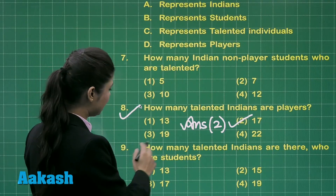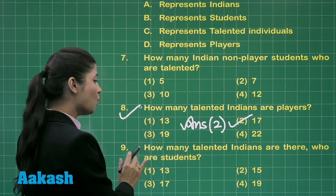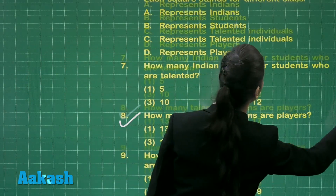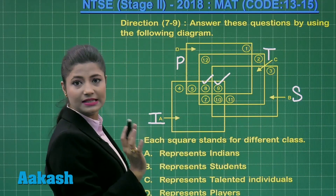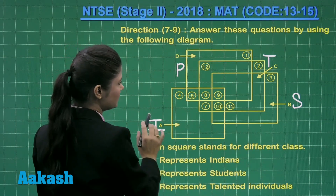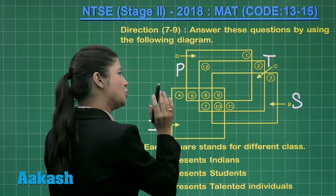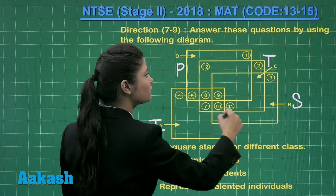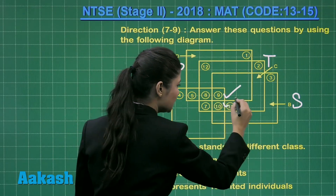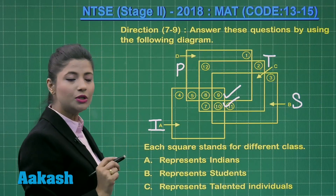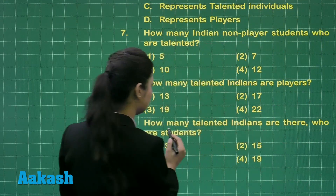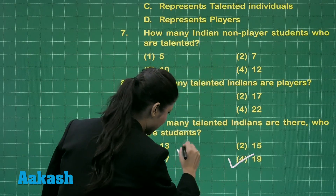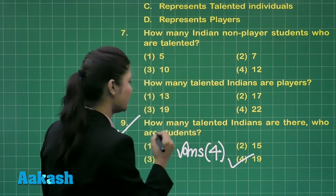Let us move on to question number 9: how many talented Indians are there who are students? You have to consider the talented Indians as well as the students. Looking at the diagram, the intersection of Indians and students includes 9 and 10, and these are also included in the talented region. So 9 plus 10 equals 19. Therefore, the answer for question number 9 is option number 4, that is 19.